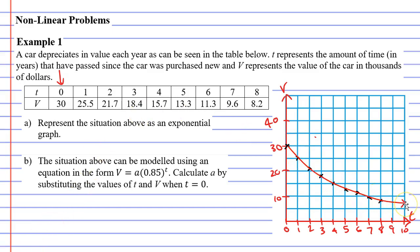Now when we draw our curve, you can see that it's an example of exponential decay. It starts off somewhat steep and gradually it seems to flatten out. This makes sense for a car, because a car at first is worth a lot of money when it's new, and each year it goes down in value. Eventually, as it gets older and older, it doesn't go down much more in price.